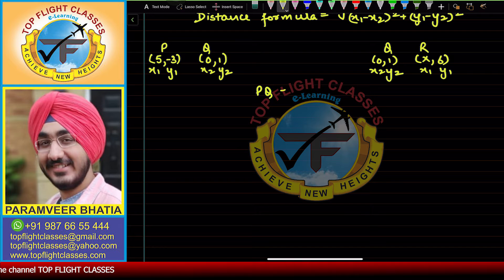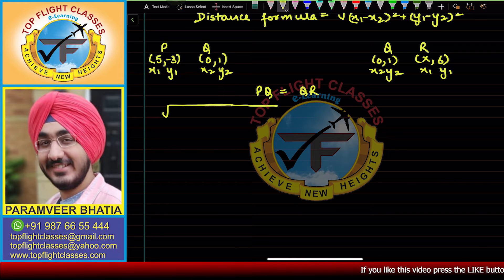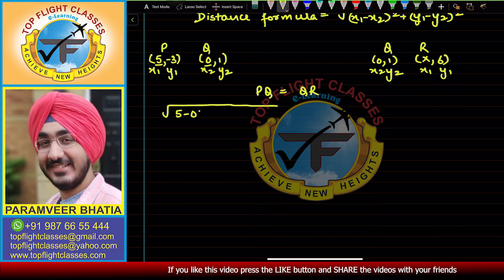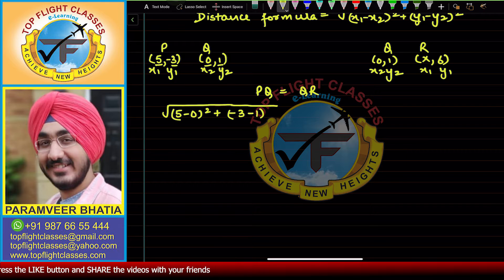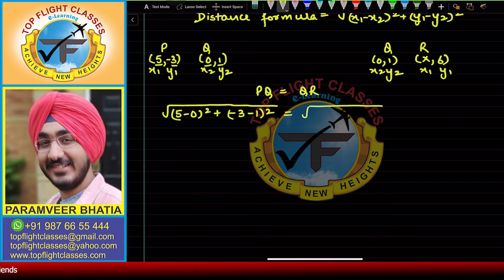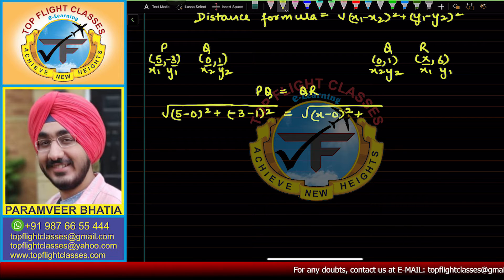Setting PQ equal to QR and applying the distance formula: PQ = √[(5 − 0)² + (−3 − 1)²], and QR = √[(x − 0)² + (6 − 1)²]. So y1 for QR is 6 and y2 is 1, giving (6 − 1)² in the expression.